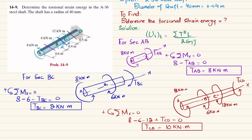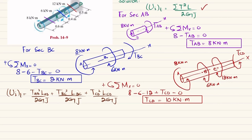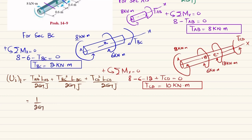Now that we have all the torques, we apply the strain energy formula. The total strain energy equals TAB² × LAB + TBC² × LBC + TCD² × LCD, all divided by 2GJ. Since the material and diameter are the same throughout, we factor out 1 over 2GJ as common.